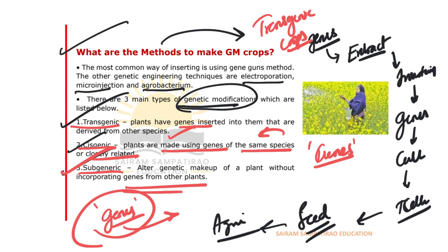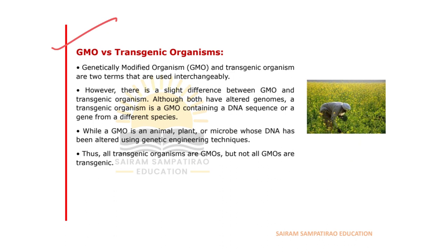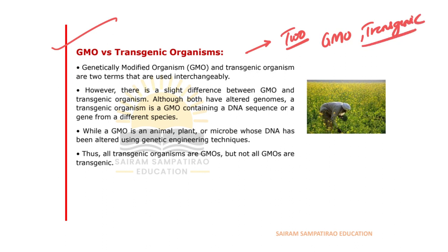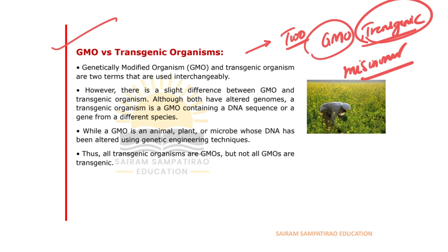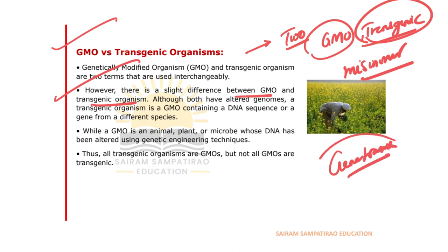Now let us talk about GMO and transgenic crops. Most people think GMO and transgenic organisms are the same — but that is actually a misnomer. There is a slight difference. Both are related to gene transfer and have altered genomes, but a transgenic organism is a GMO that contains a DNA sequence or gene from a different species.